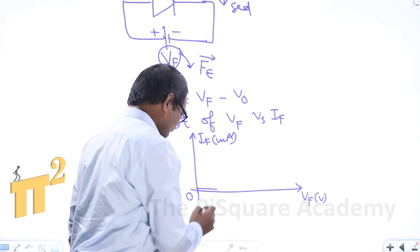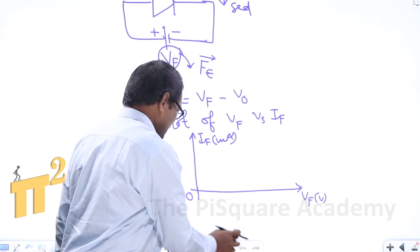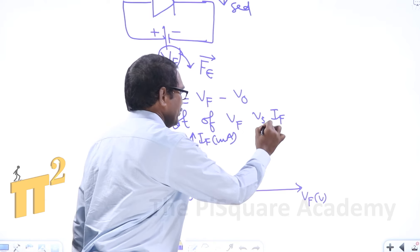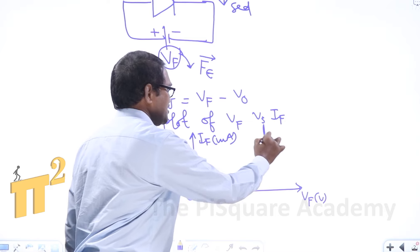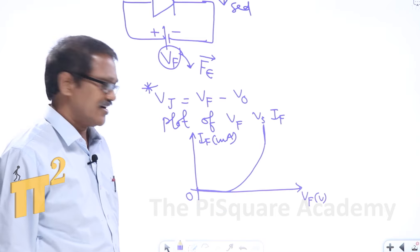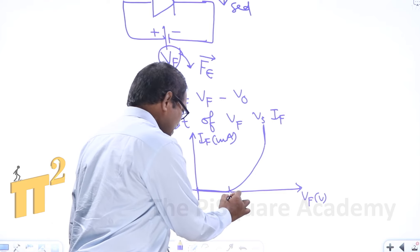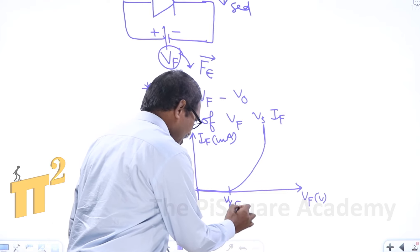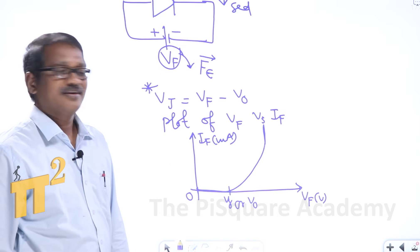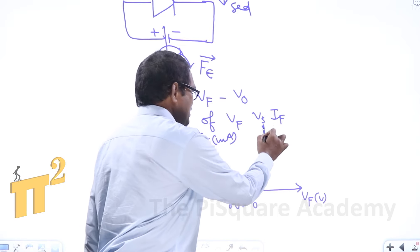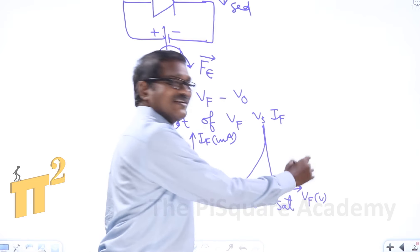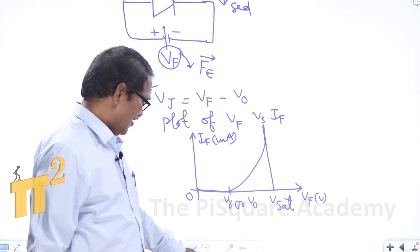If we join the forward voltage and the corresponding current flowing through the diode, we can practically observe this type of characteristic curve. This point corresponds to V-gamma, or threshold voltage, or contact potential. This is the point corresponding to Vsat, the saturated forward voltage.